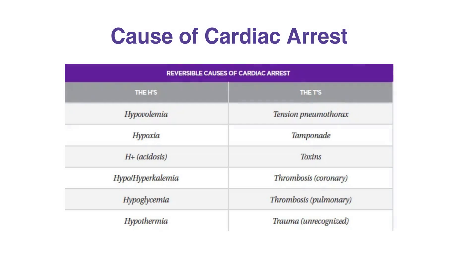It may be possible to identify a reversible cause of cardiac arrest and treat it quickly. The reversible causes are essentially the same in children and infants as they are in adults. The reversible causes are divided into the H's and the T's. The H's include hypovolemia, hypoxia, H+ acidosis, hypo- and hyperkalemia, hypoglycemia, and hypothermia.